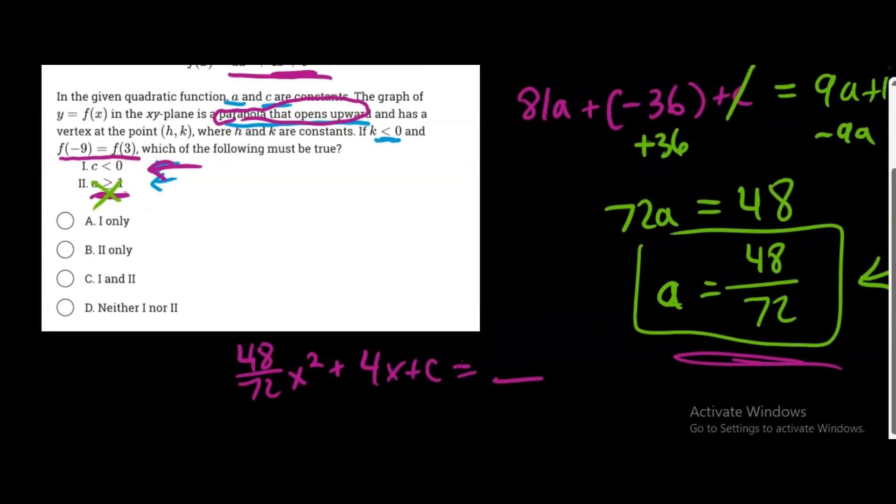But what we do know is that they've given us this information. K has to be a negative. What is k? K is the y-coordinate of the vertex, right? And so the vertex has both x and y-coordinates. And so h, what is h? H is the x-coordinate of the vertex. So if we can find the value of h, we can plug it into this equation down here and see if the generalization is true to solve for c.